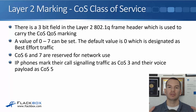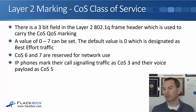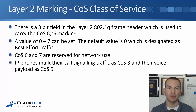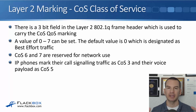The first is CoS, class of service. This is a layer 2 QoS marking. There's a 3-bit field in the layer 2 802.1Q frame header which is used to carry the CoS marking. With 3 bits, we can set a value from zero through to seven. The default value is zero, designated as best effort traffic. CoS 6 and 7 are reserved for network use like routing protocols and network control traffic, so the next highest value available is 5.